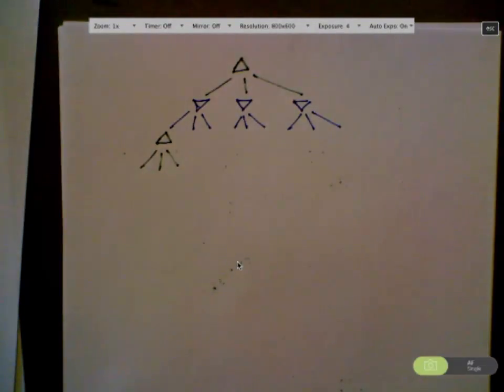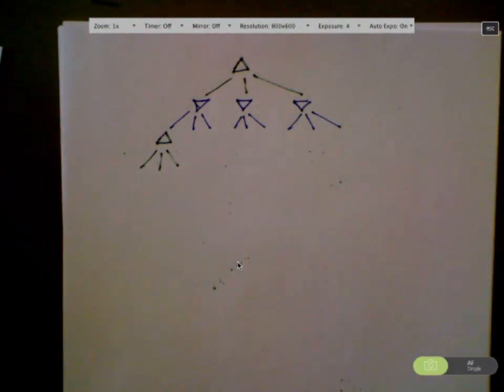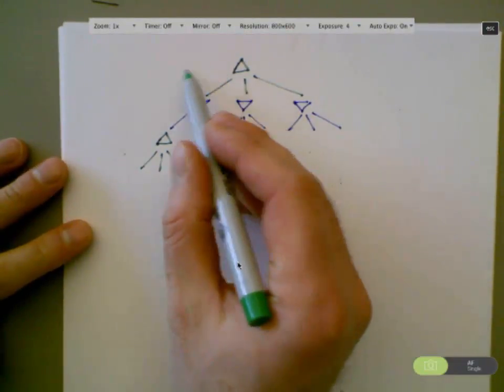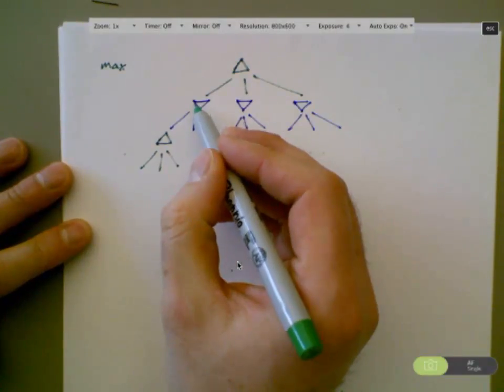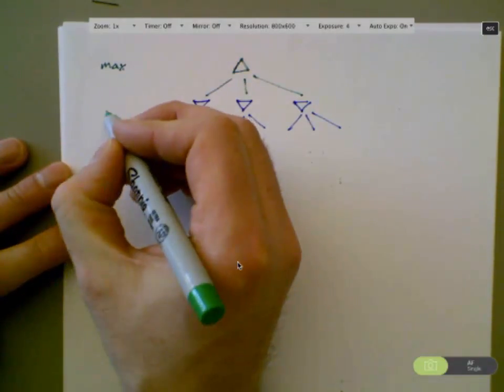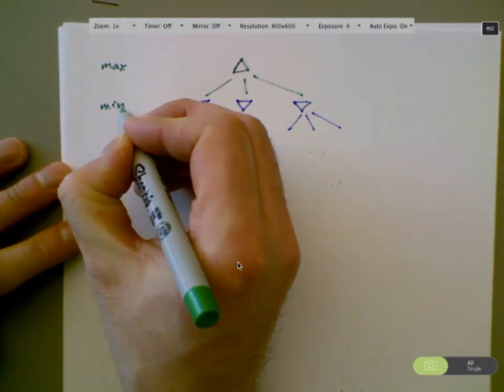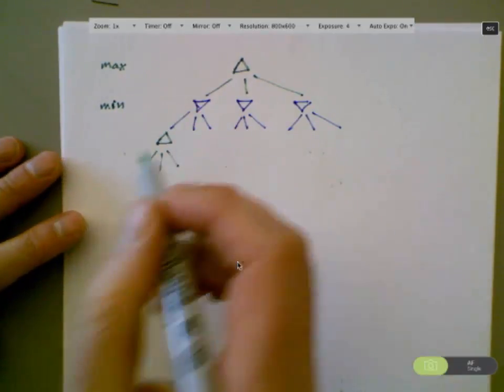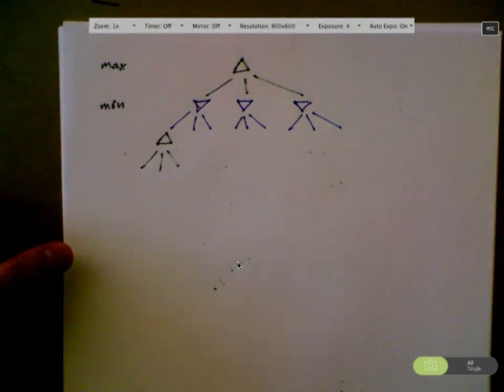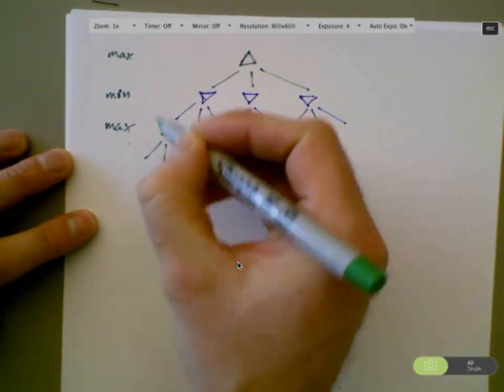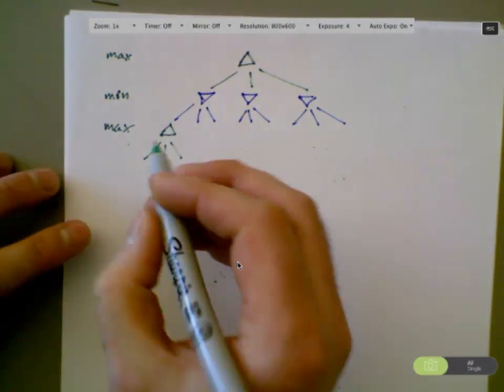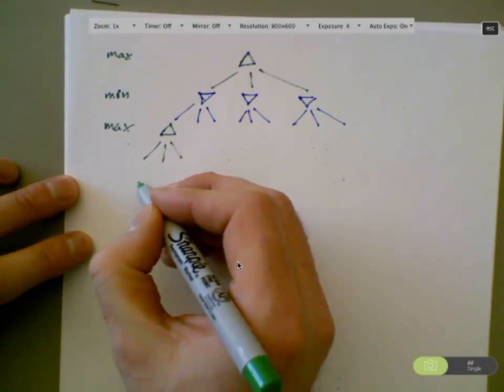Because we'll adopt the convention that I'm trying to maximize my score. So the player at this level is trying to maximize. The player, this opponent is trying to minimize my score or in general maximize his own score. And then at the next level, we max his turn.